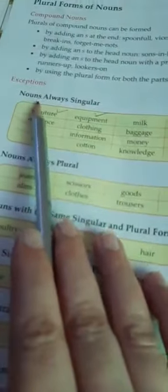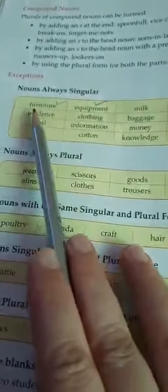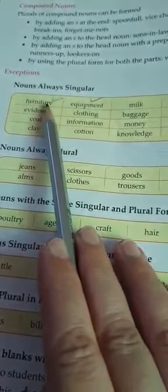Now, you have also done these exceptions in which some nouns are always in singular, out of which we have furniture, equipment, milk, etc. So here the option will remain as furniture. Furniture will remain; there is no plural form of it.